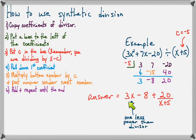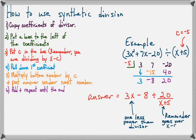Remember that the quotient is going to be one less power than the divisor, and the last number is your remainder, and it goes over whatever you divided by.